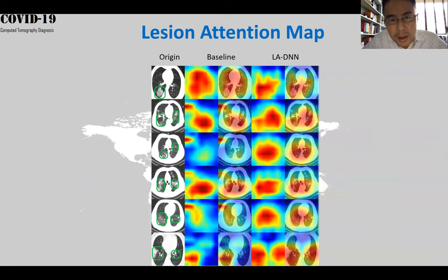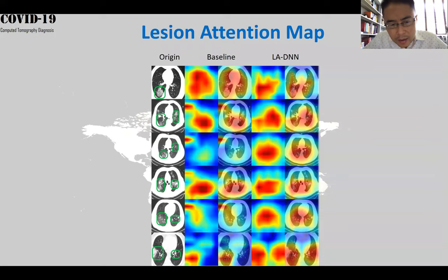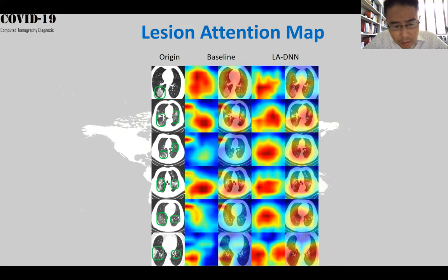Here's the lesion attention map. You can see that in comparison with the baseline model, the LADN model can more precisely focus attention on the disease areas. The lesion areas are boxed by a green color box.